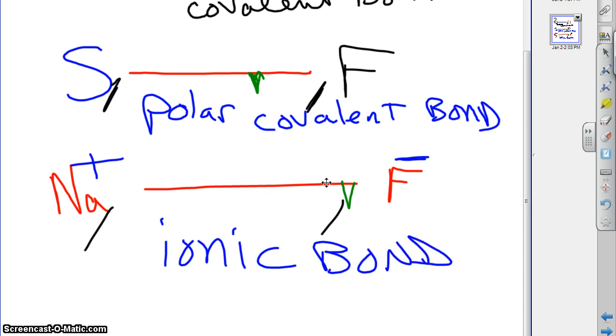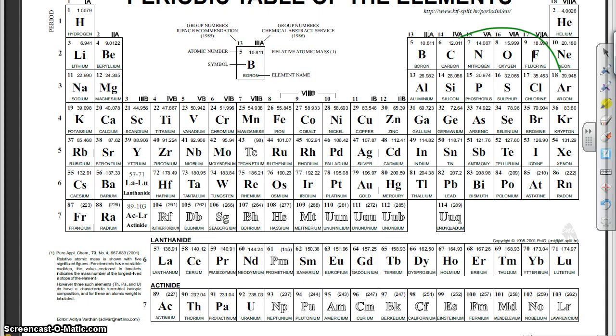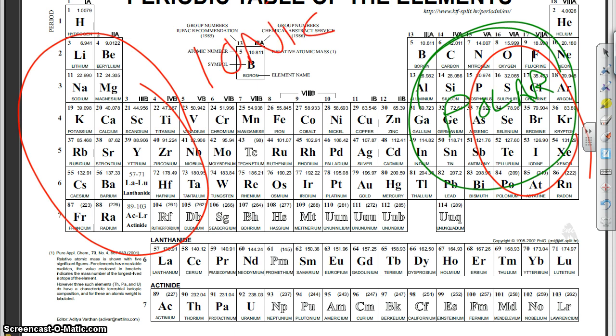And so, how do you predict these? Well, it's pretty simple. If you have two nonmetals, two things over here, but they're not the same element, that's going to be polar. If you have one thing on this side and one thing on this side, it's going to be ionic. A metal and a nonmetal, it's going to be ionic. But if you have two of exactly the same element, fluorine with fluorine, chlorine with chlorine, oxygen with oxygen, those are going to be nonpolar.